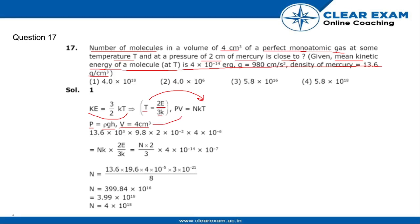Now we will simply put in the values in the form of PV equals NkT. Density of mercury is given as 13.6 × 10³ g/cm³, g is 9.8 m/s², h is 2 cm which is 2 × 10⁻² m, V is 4 cm³ which is 4 × 10⁻⁶ m³.